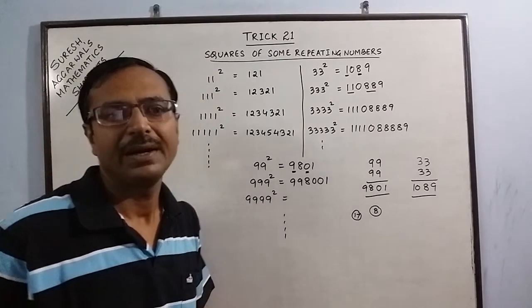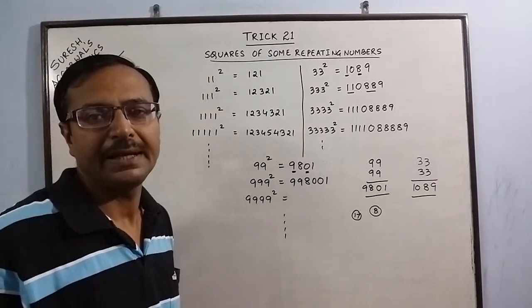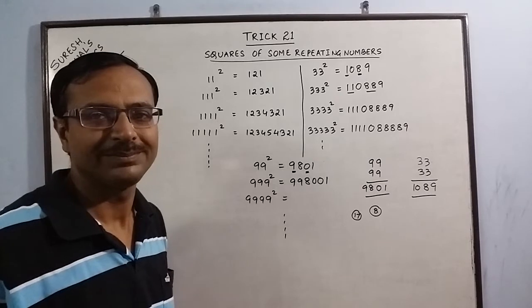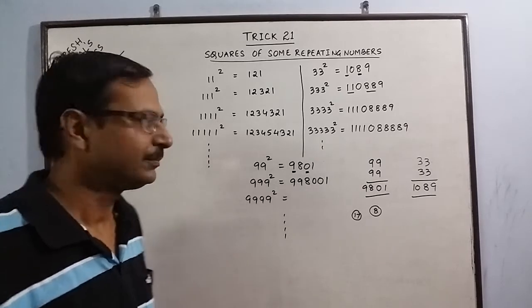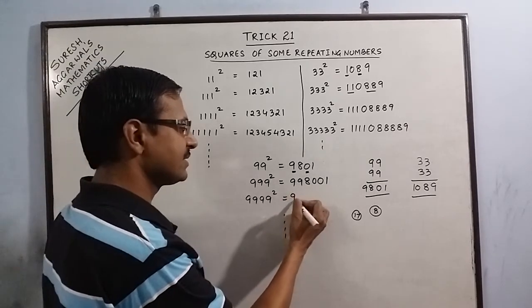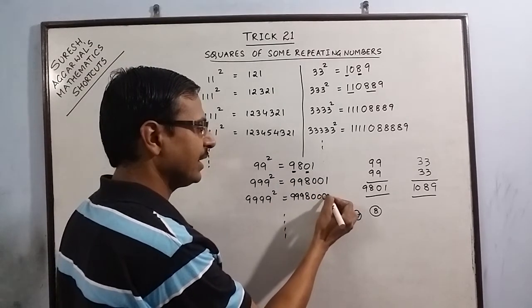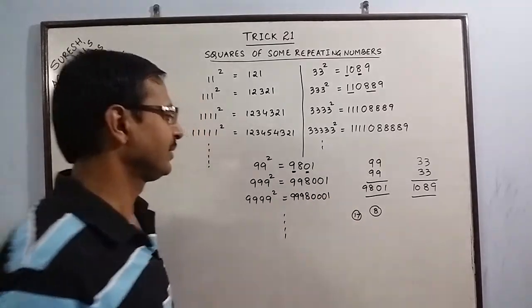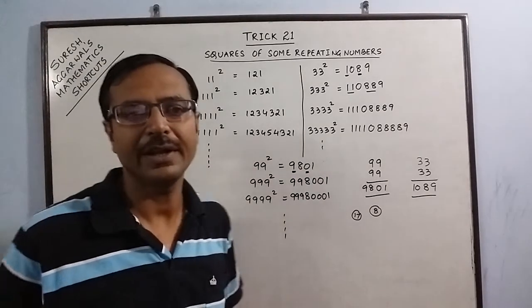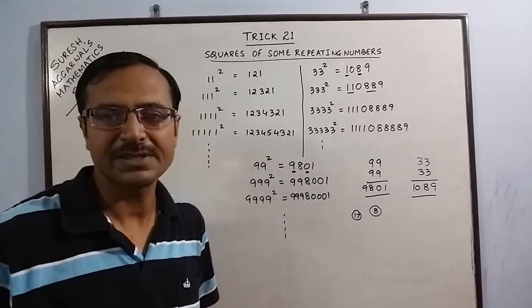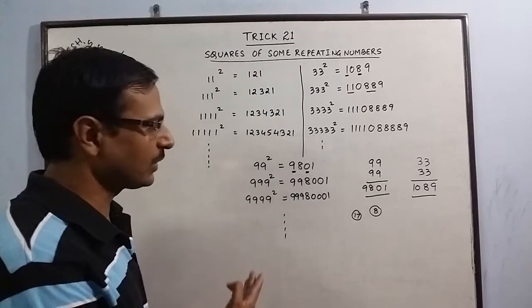So the square of 999 is 998,001. And now we can repeat this pattern: 3 nines, 1 eight, 3 zeros, and 1. Square of 99,999 is triple 9, 8, triple 0, 1, and so on.